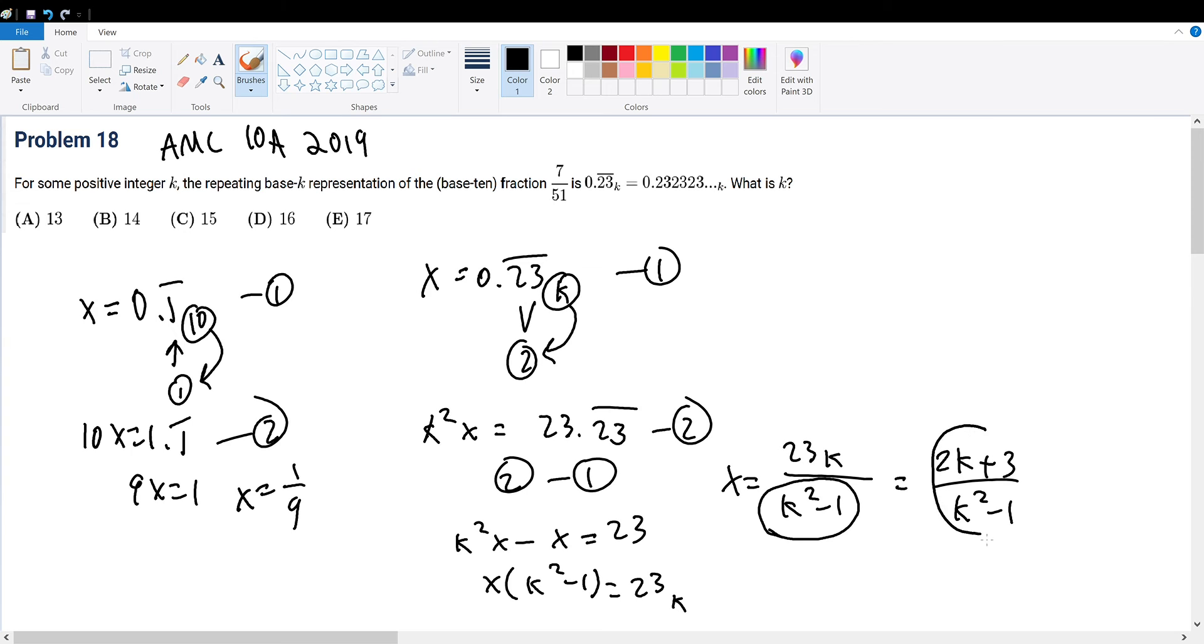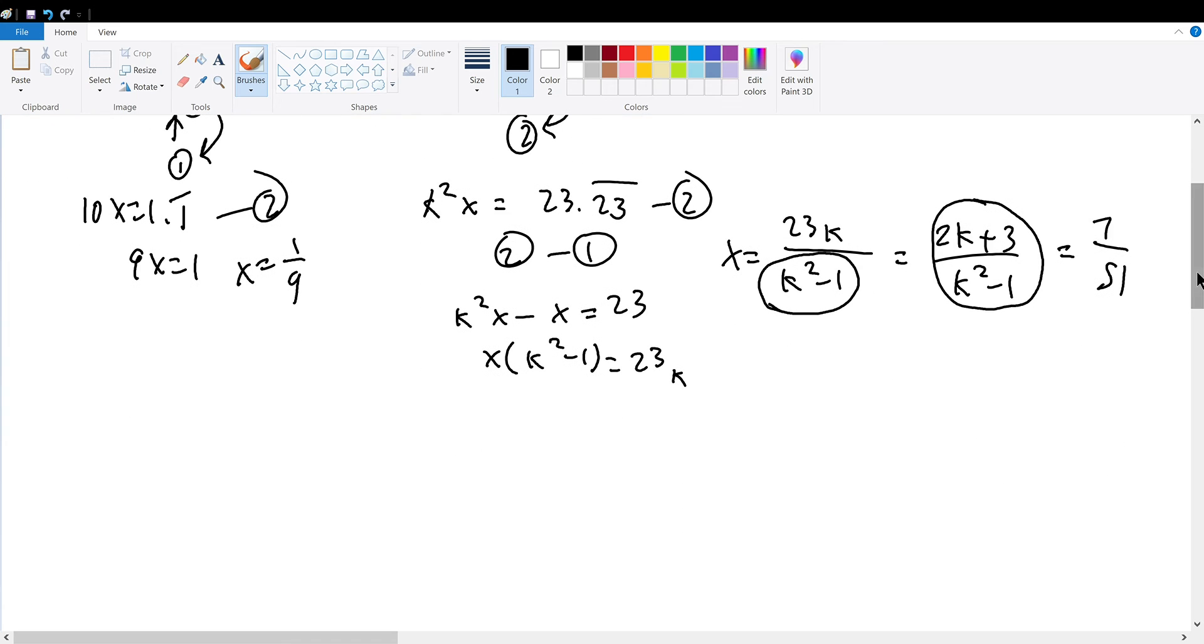So this fraction must be the base 10 equivalent to 0.23 repeating, but we are given what this fraction is. We're given that this is 7 over 51. So this fraction must be conveniently equal to 7 over 51 as well. And since we have one equation and one variable, we can solve the variable of k. So cross multiply.